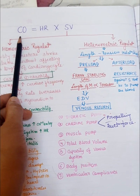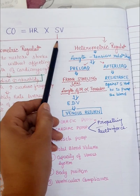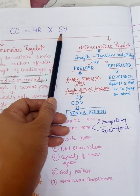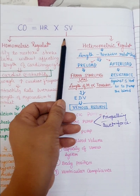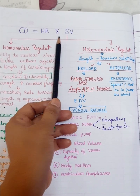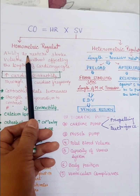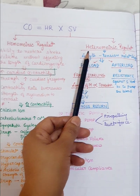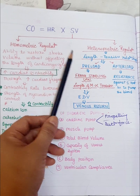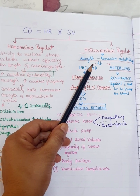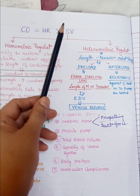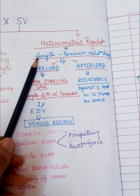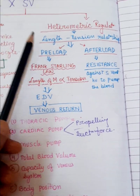In this lecture we will study the factors that affect the stroke volume. There are two factors: first is the homometric and second is the heterometric regulation. These regulate the stroke volume, and in this lecture we will study the heterometric regulation.